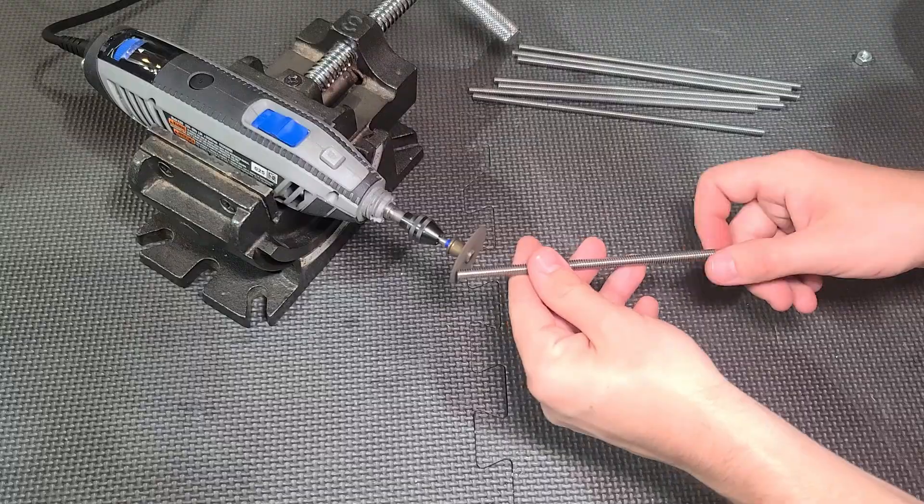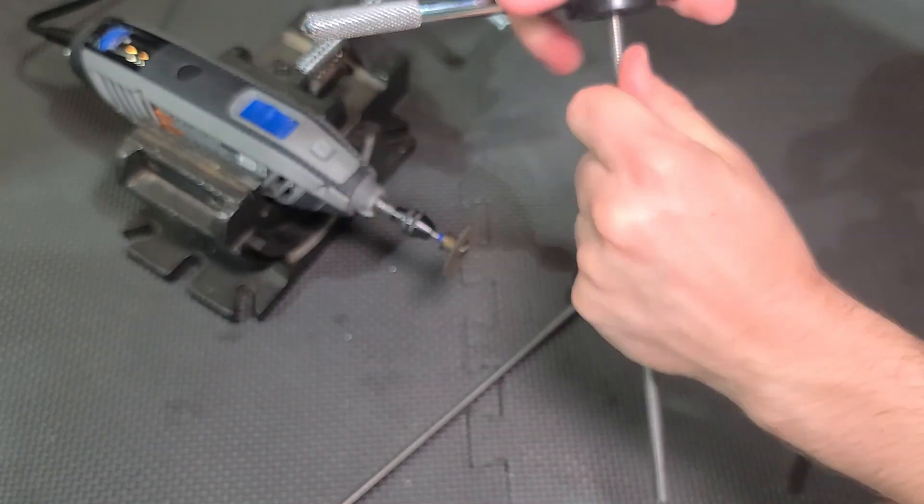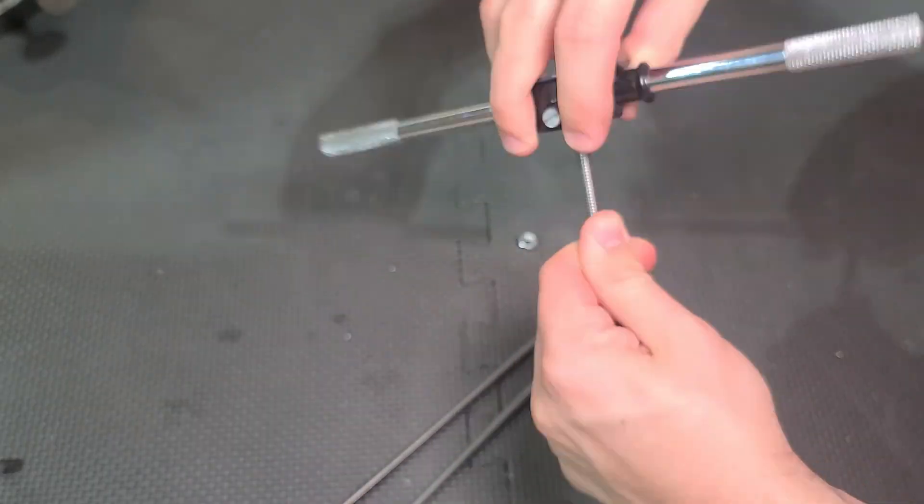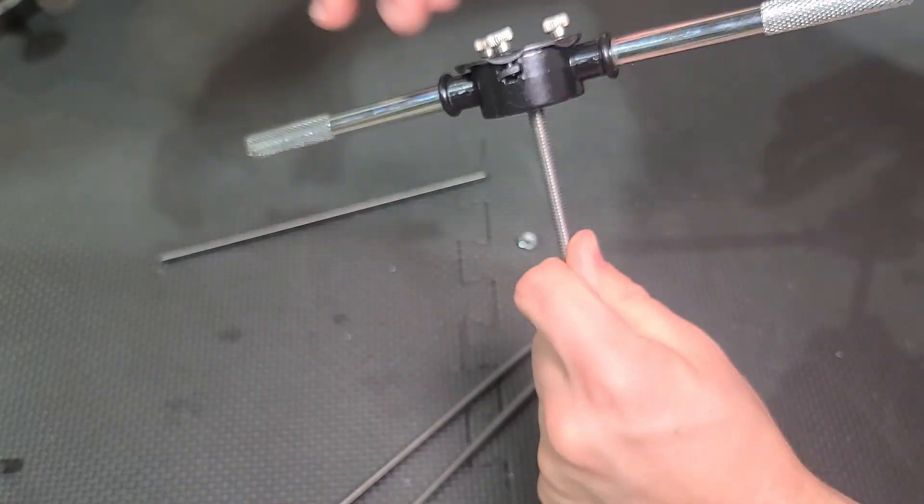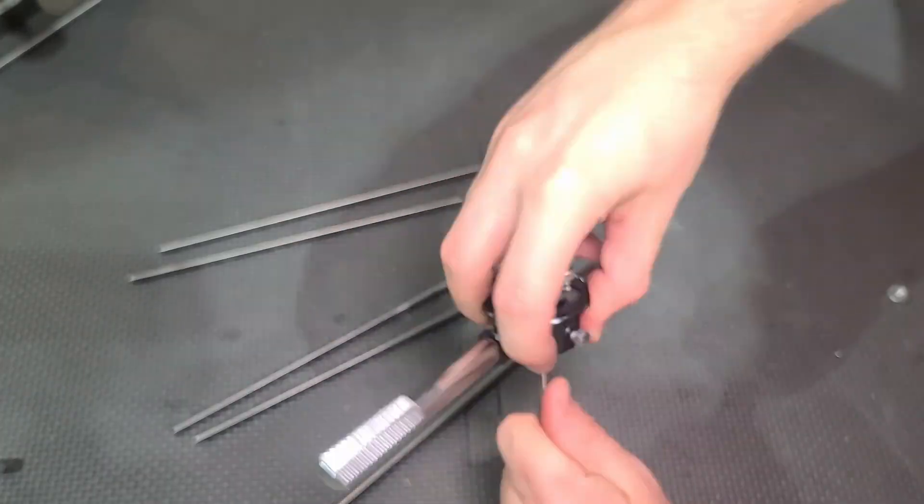But even after giving it that chamfer, you still need to use a die to fix the ends of those rods so that a quarter 20 size nut can easily fit and thread on with no problem.